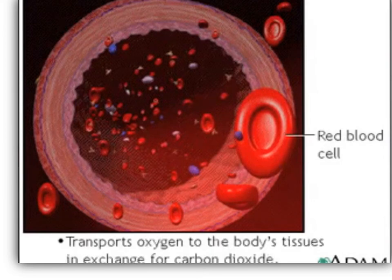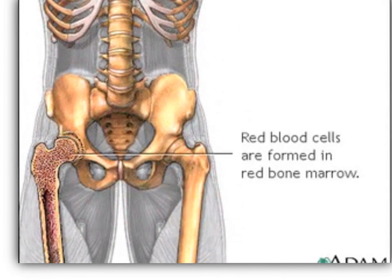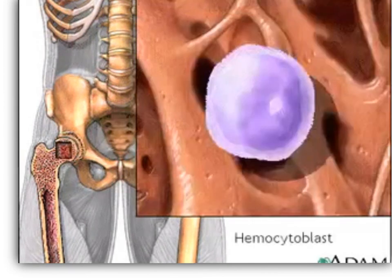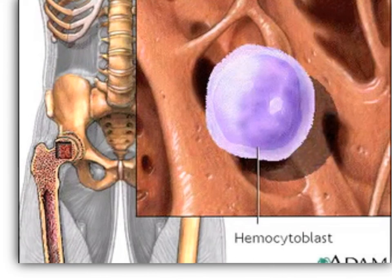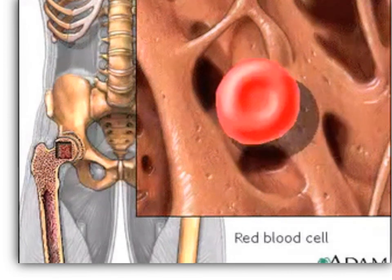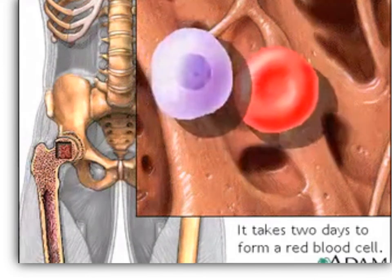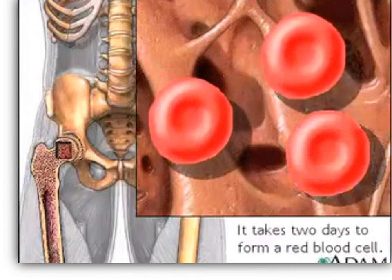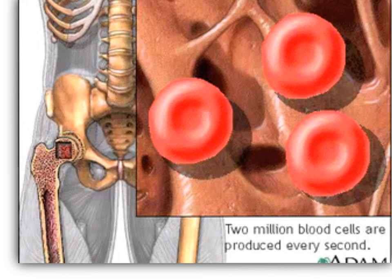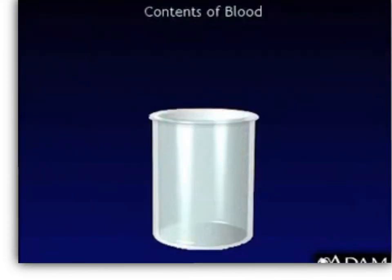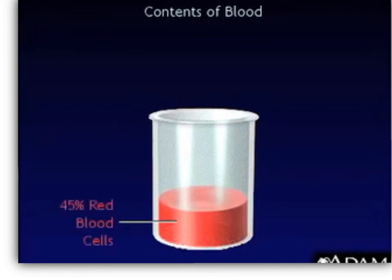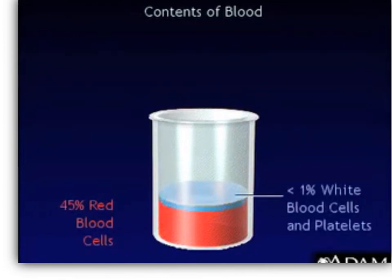Red blood cells are an important element of blood. Their job is to transport oxygen to the body's tissues in exchange for carbon dioxide, which is carried to and eliminated by the lungs. Red blood cells are formed in the red bone marrow of bones. Stem cells in the red bone marrow called hemocytoblasts give rise to all the formed elements in blood. If a hemocytoblast commits to becoming a proerythroblast, it will develop into a new red blood cell. Formation of a red blood cell from a hemocytoblast takes about two days, and the body makes about two million red blood cells every second. Blood is made up of both cellular and liquid components — when spun in a centrifuge, blood separates into 45% red blood cells, less than 1% white blood cells and platelets, and 55% plasma.